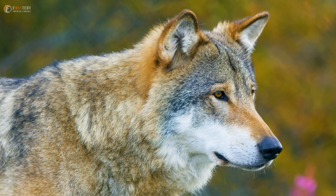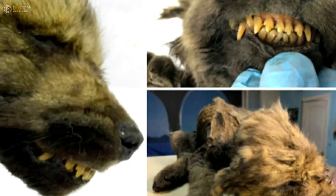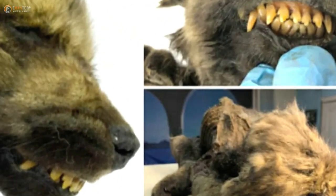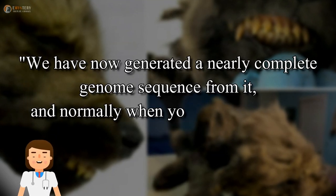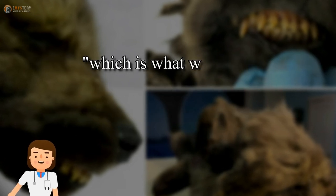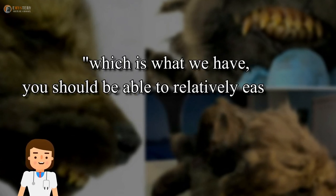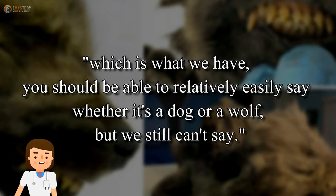For these scientists, the search for the answer was all part of the fun. In an interview with the Associated Press, Dalian said, we now have generated a nearly complete genome sequence from it, and normally when you have a two-fold coverage genome, which is what we have, you should be able to relatively easily say whether it's a dog or a wolf, but we still can't say.